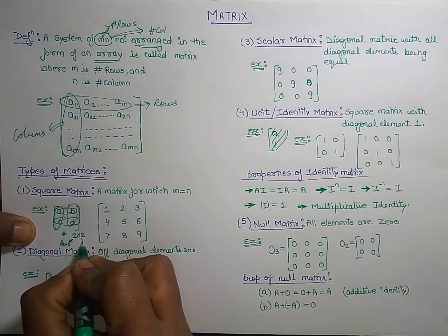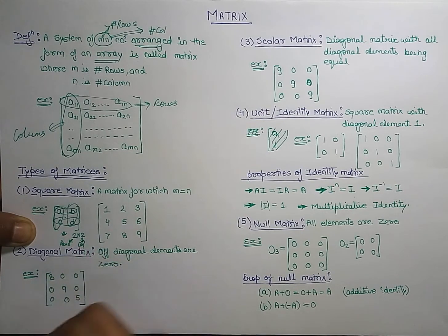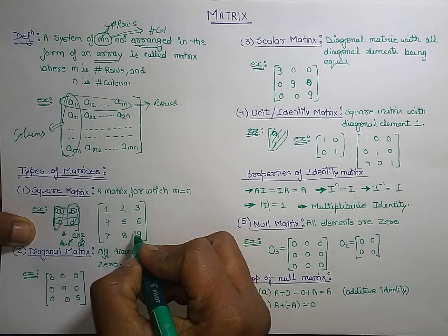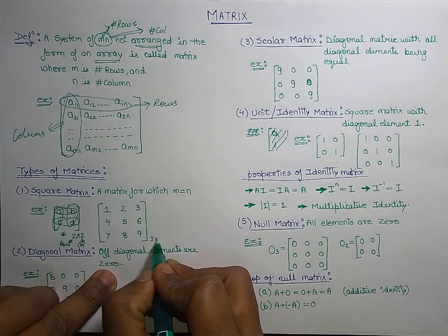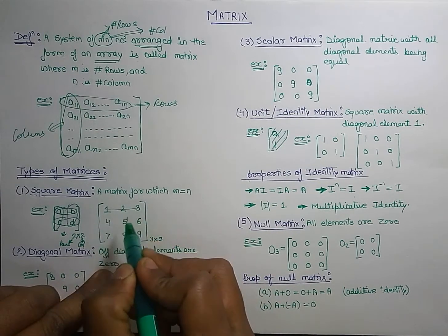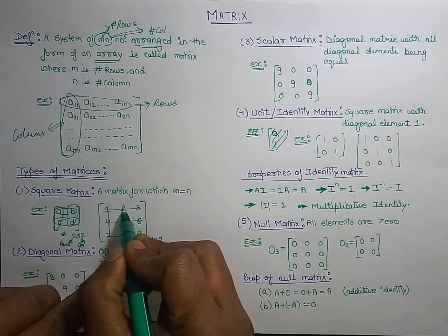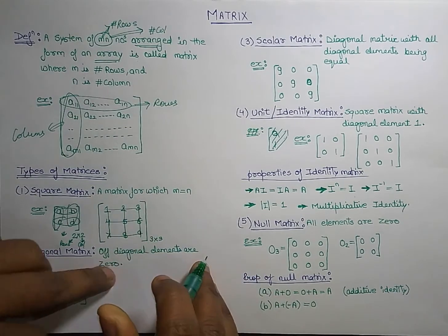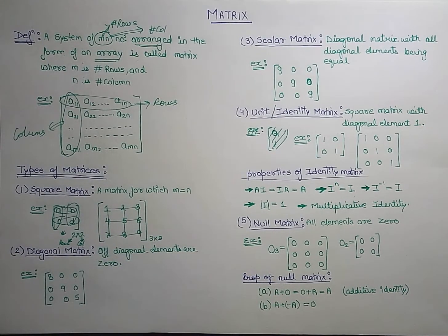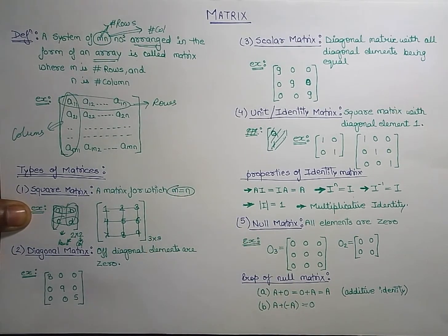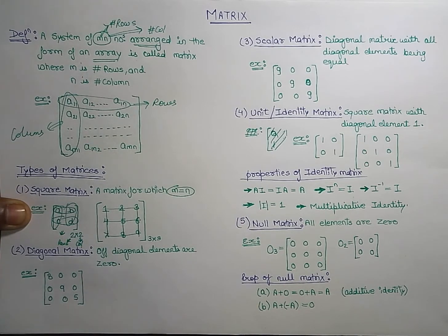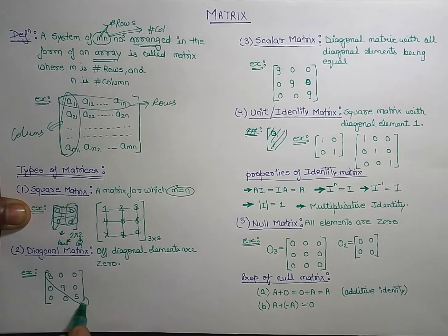We represent it in the form of two by two, or m by n, where the first number represents rows and the second represents columns. Similarly, this example is a matrix of three by three because there are three rows and three columns. So if the number of columns equals the number of rows — that means m equals n — the matrix is a square matrix.